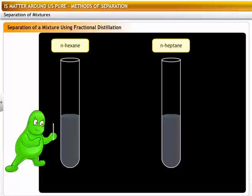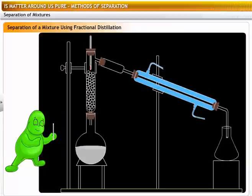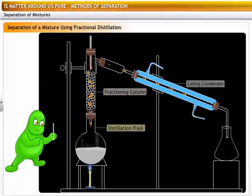Let's take an example of two such liquids, N-hexane and N-heptane. As you can see in the diagram, the apparatus is almost the same as used in distillation. The only difference is that a fractioning column is fitted in between the distillation flask and the condenser.